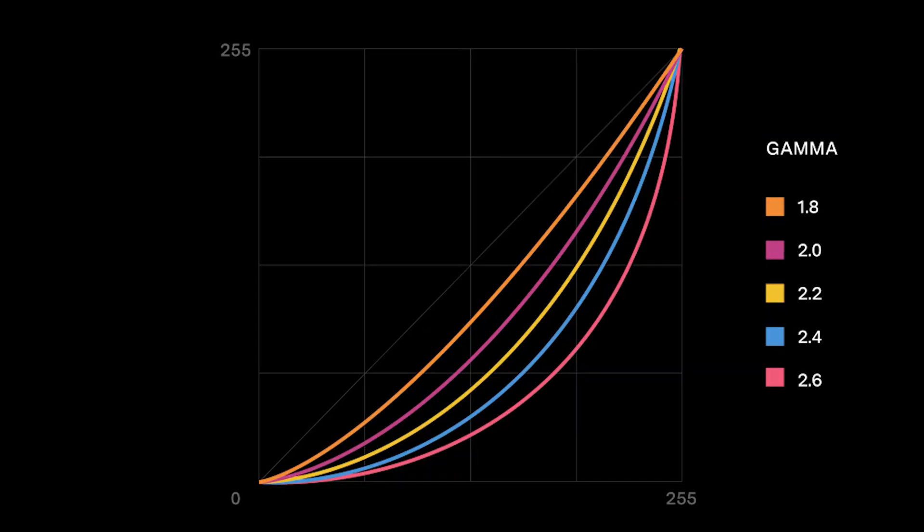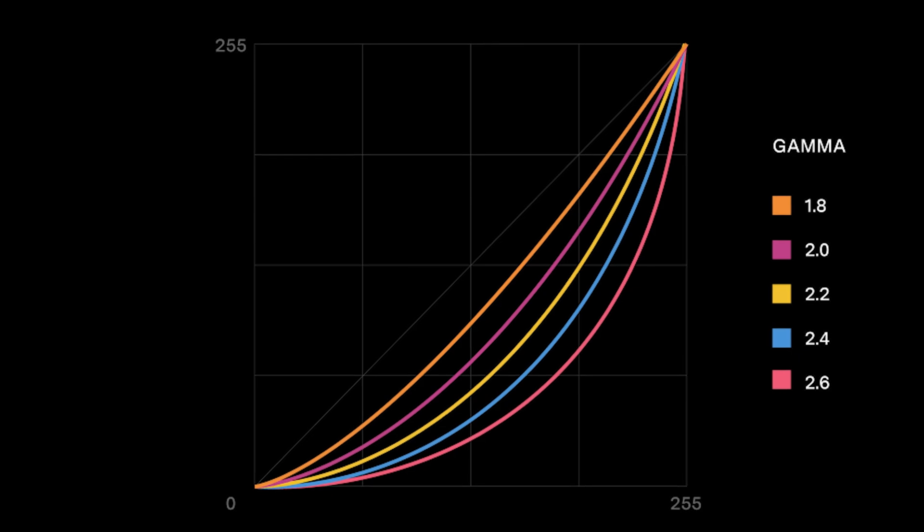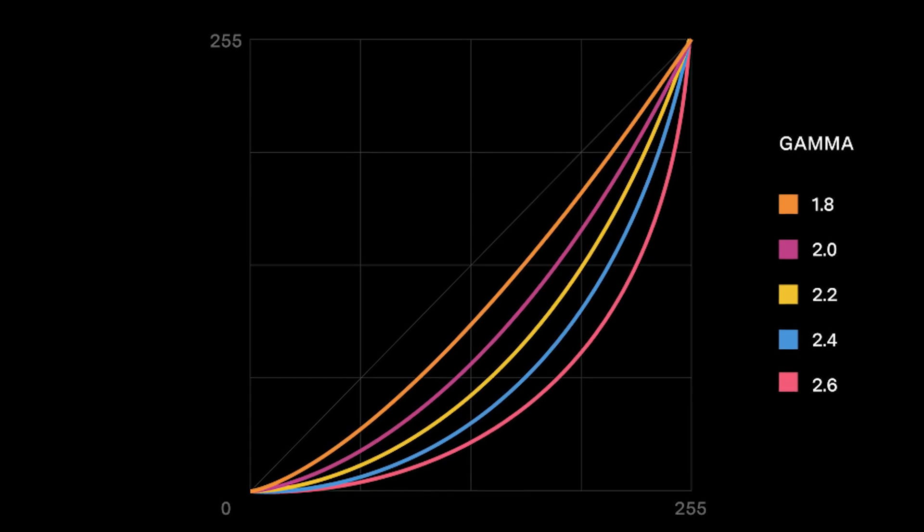One last question you may have: which gamma value should you use — 2.4, 2.2, or 1.96? In most cases you should use gamma 2.2 in Adobe Premiere Pro, as it is considered the standard for most viewing environments including web viewing and typical computer monitors. However, if you're working for broadcast television or in a very dark room, then using gamma 2.4 might be more appropriate.